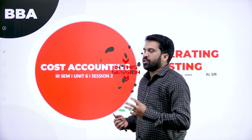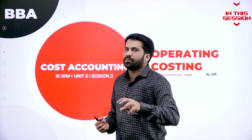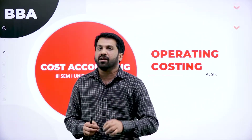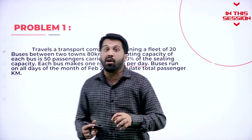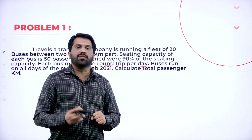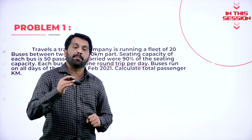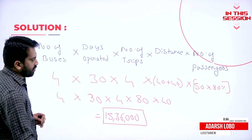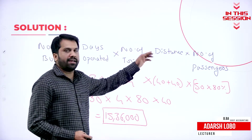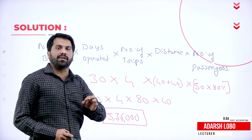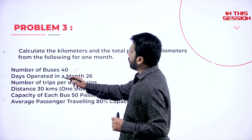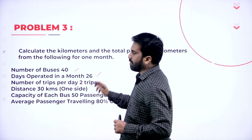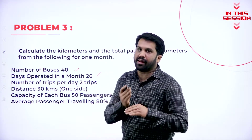Under operating costing, your 5-mark question requires you to find out total passenger kilometres — not cost per kilometre, only total passenger kilometres. The easiest way: whatever is given in the information, copy and replace with numbers, then multiply. For example, number of buses is 40, days operated is 26, excluding Sunday.